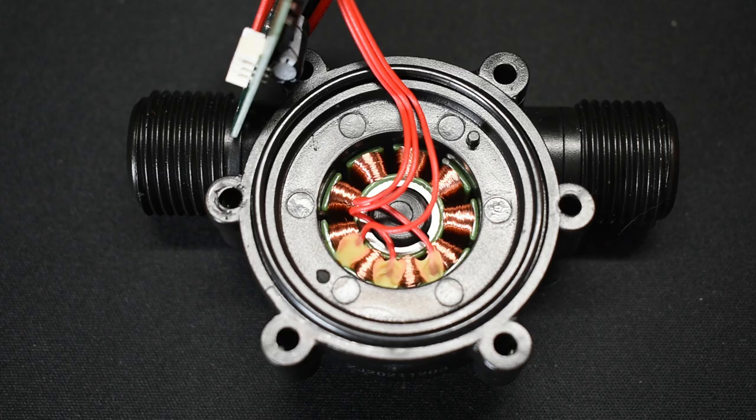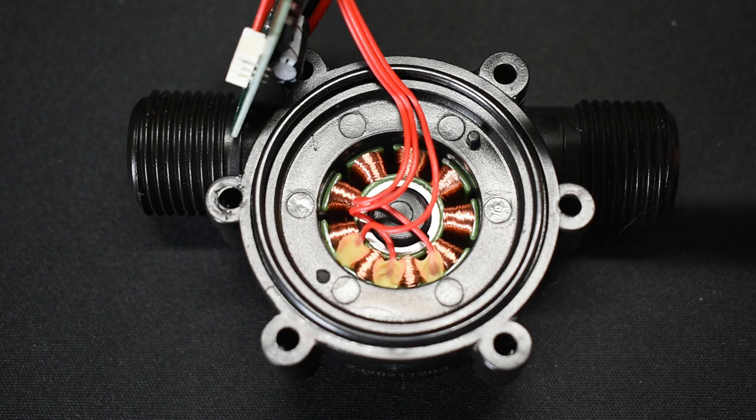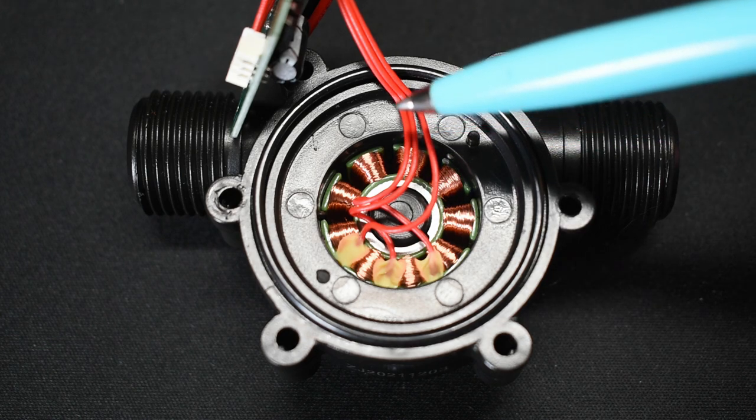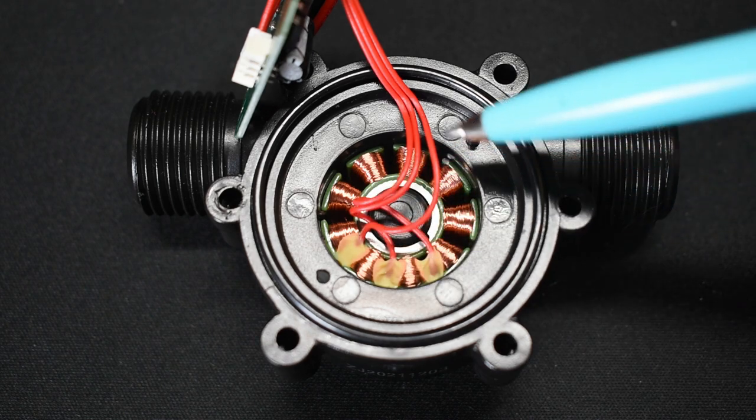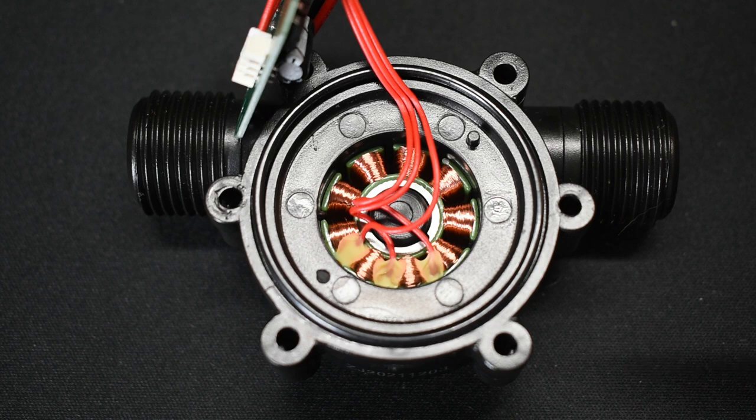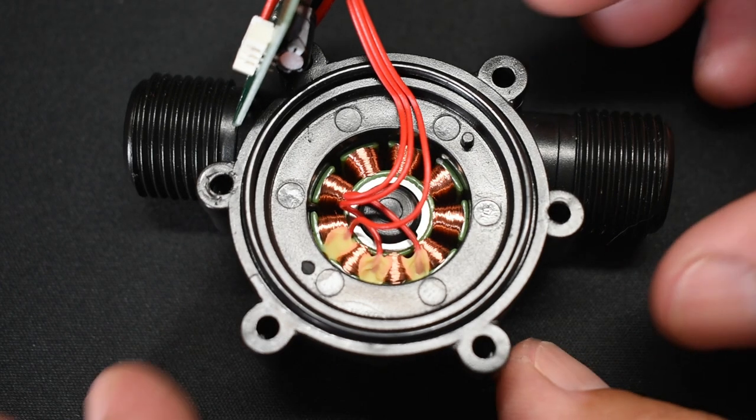Okay, so back to the little mini electric generator. You can see there are nine poles. One, two, three, four, five, six, seven, eight, nine. Got an O-ring seal here. It appears to be constructed pretty well considering it's an inexpensive generator.